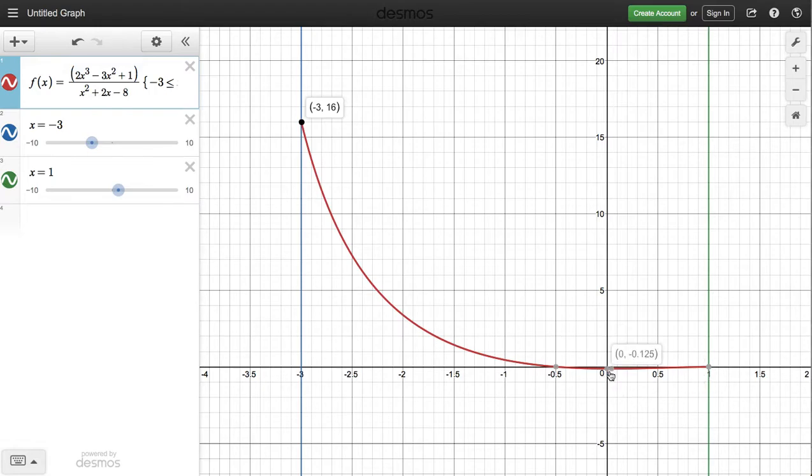And then there's two points indicated here. One of these is the y-intercept, which is 0, negative 0.125. And the other one is the minimum value of this curve, which happens to be at 0.046 and negative 0.126.